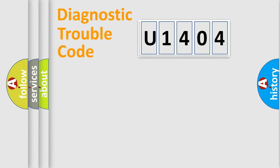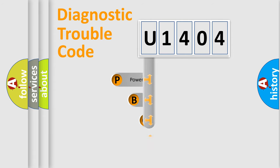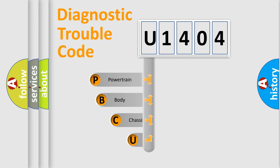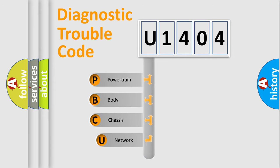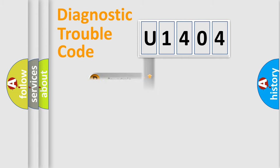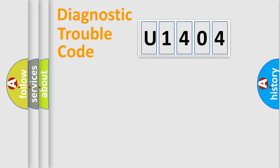First, let's look at the history of diagnostic fault code composition according to the OBD2 protocol, which is unified for all automakers since 2000. We divide the electrical system of an automobile into four basic units: Powertrain, Body, Chassis, and Network.